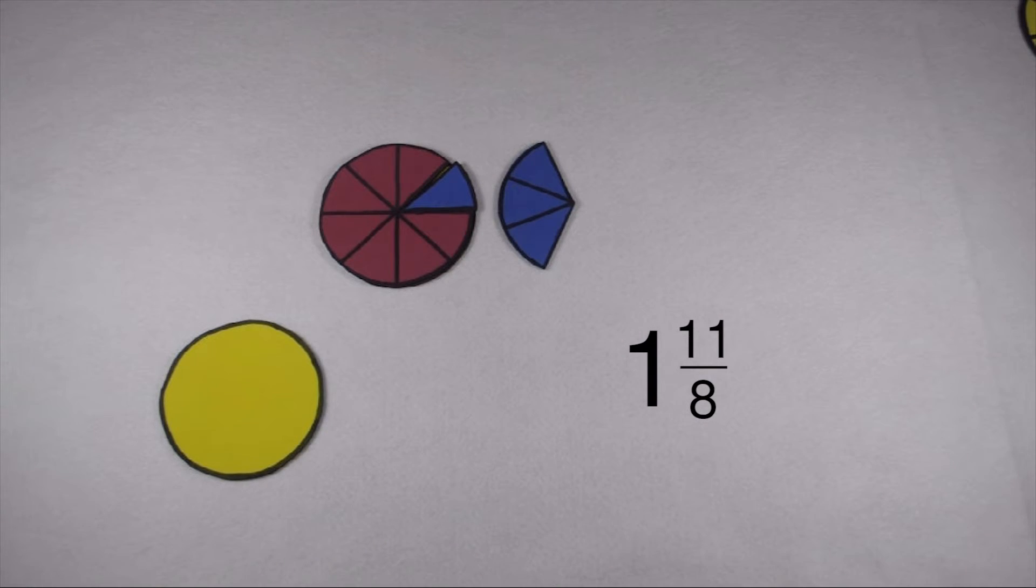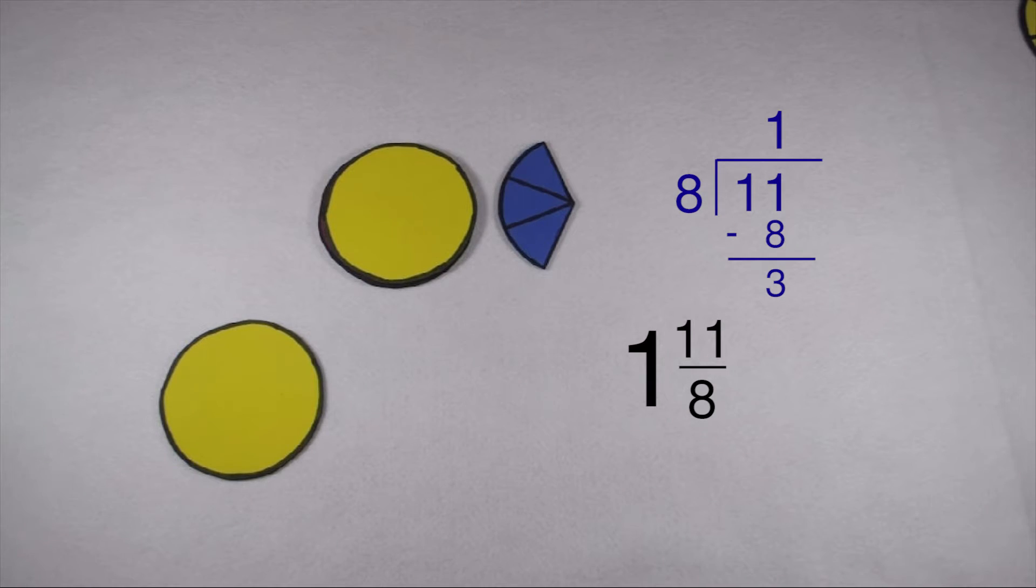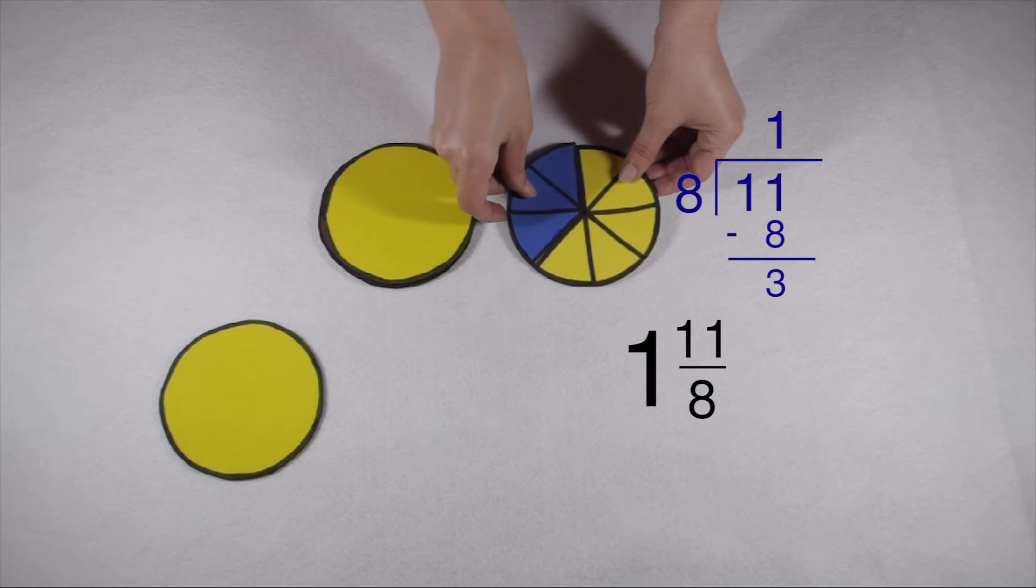When I divide 11 by 8, I can put these 8 pieces together to make 1 whole, and my remainder of 3 becomes the numerator of my next fraction.